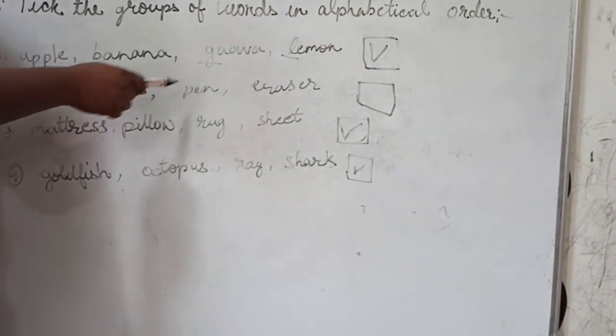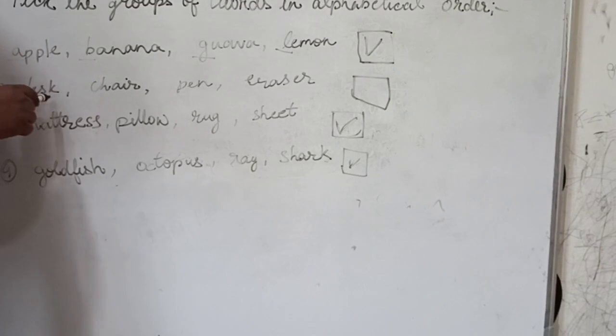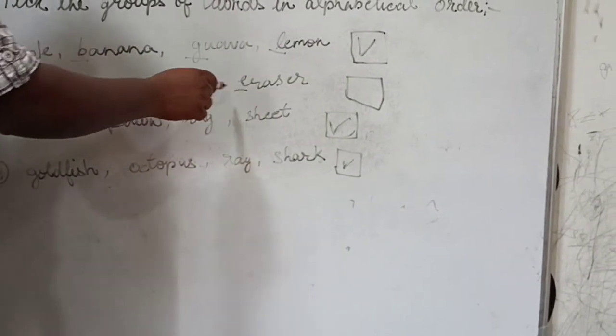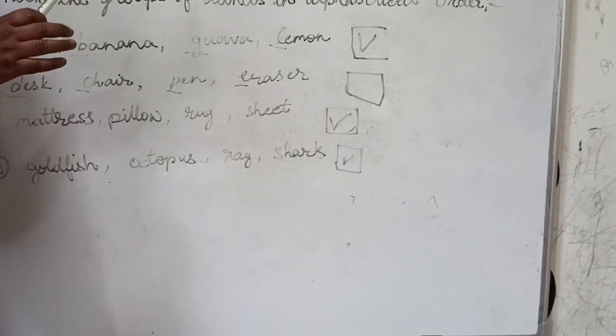Number 2: Desk, Chair, Pen, Eraser. See the first letter of these words: D, C, P, E. Is it in alphabetical order? No. So we won't tick.